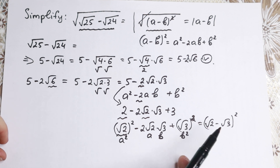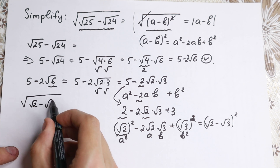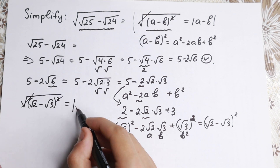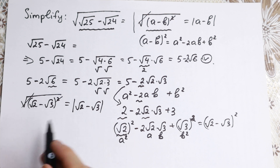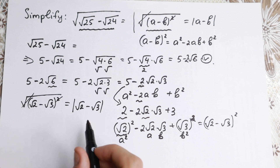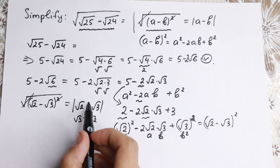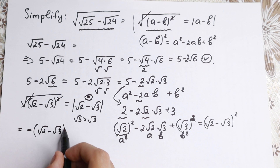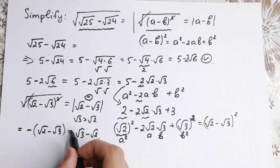So the last step: we put this formula back into our original expression. We have square root of (square root of 2 minus square root of 3) squared. As I showed earlier, we can cancel the square root sign with the square, giving us the absolute value of (square root of 2 minus square root of 3). Many students skip the absolute value, but this is really important — because square root of 3 is greater than square root of 2, the expression inside is negative. So the absolute value gives us a minus sign, rearranging to square root of 3 minus square root of 2.